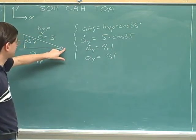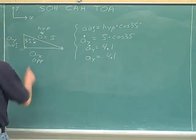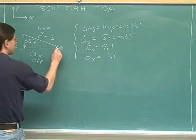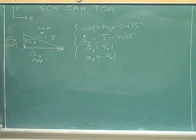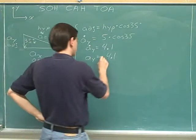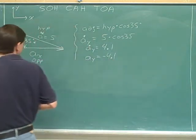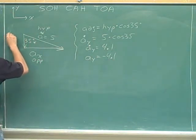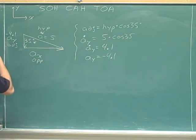The overall vector was pointing down and to the right, so the legs should be pointing down and to the right. And now, we can see that A sub Y is pointing down while the positive direction is up, so A sub Y is pointing in the negative direction. A sub Y is negative 4.1.